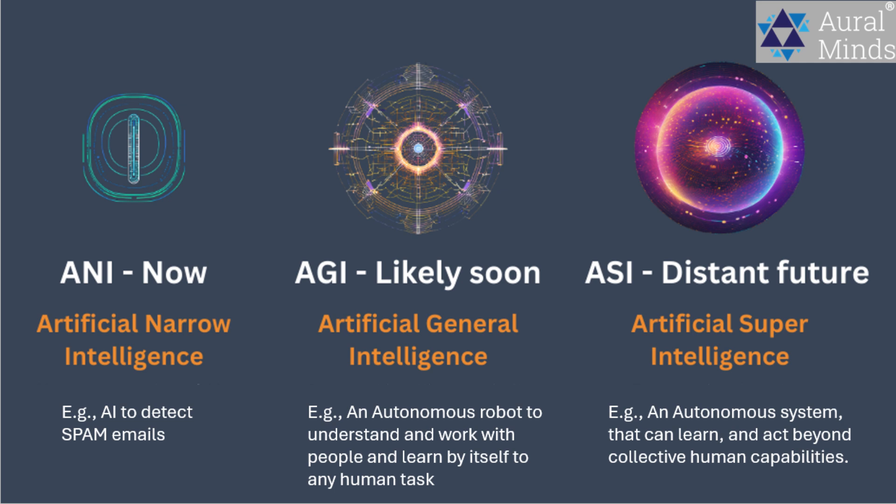Think of separate AI models. One AI detects objects in an image, one AI recognizes voice commands, and another AI translates languages. ANI is great at handling a single problem efficiently but can't adapt to other tasks.